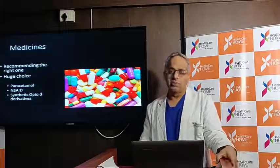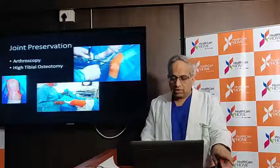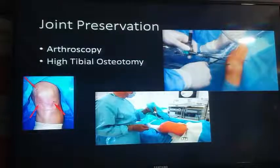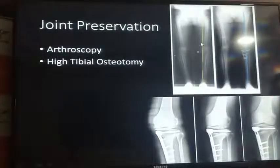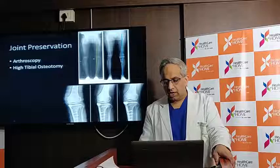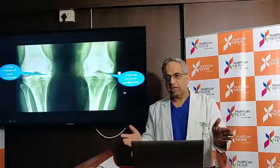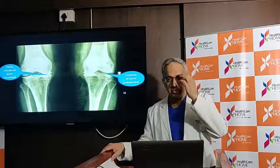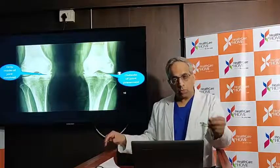On the surgical side: arthroscopy uses a small hole with a camera and instruments to smoothen out or trim the cartilage. There is also a realignment operation — where the weight-bearing line is shifted through a surgical cut to change load distribution. If everything else has failed, there is the option of replacement. Knee replacement technology is very good — we can place the implant exactly where needed using a computerized navigator. You can even have a robotic knee replacement nowadays.